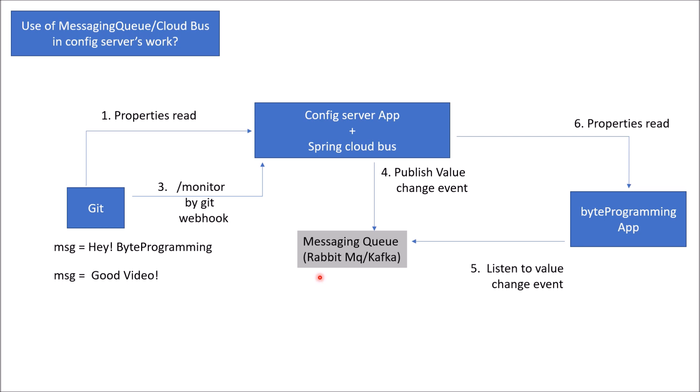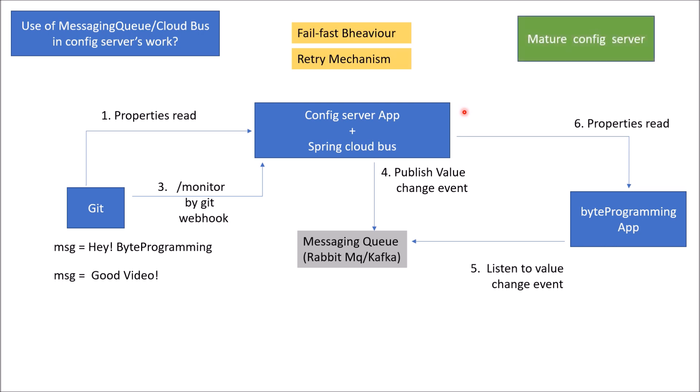This represents about 80% maturity for a config server. The remaining 20% involves adding fail-fast behavior and a retry mechanism to make it more reliable and resilient. Fail-fast here means that if you start the client application and the config server is down, the client application will not start. The retry mechanism, as the name suggests, keeps trying to restart until the config server is back up, based on a minimum number of retries. This is how a mature config server model looks.